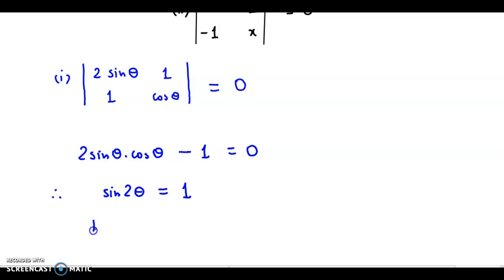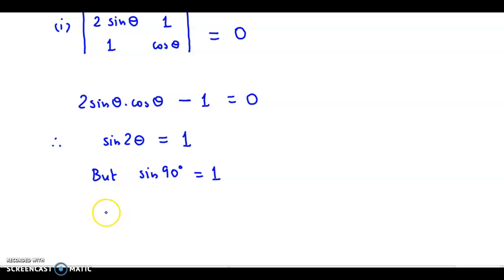But we know that sin90° = 1. So therefore if we compare the two, we could say 2θ is equal to 90 degrees.